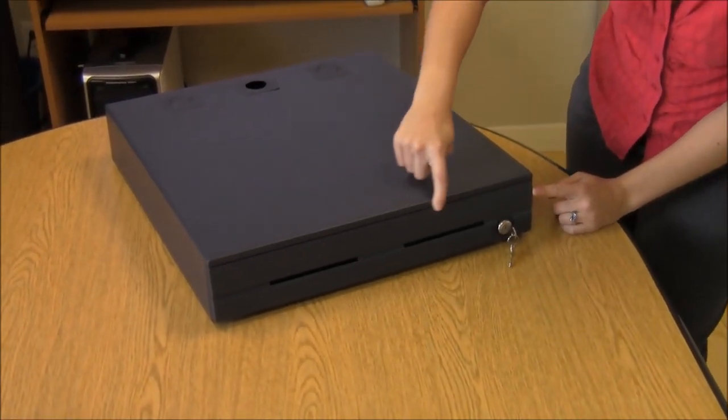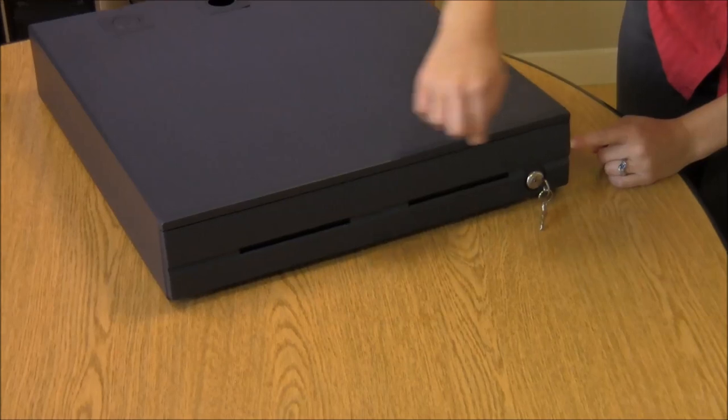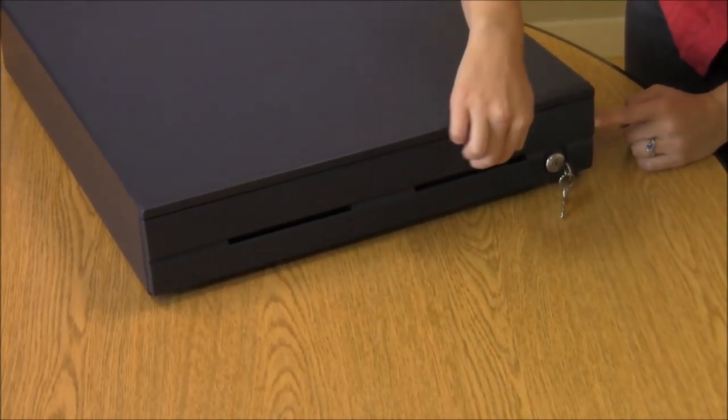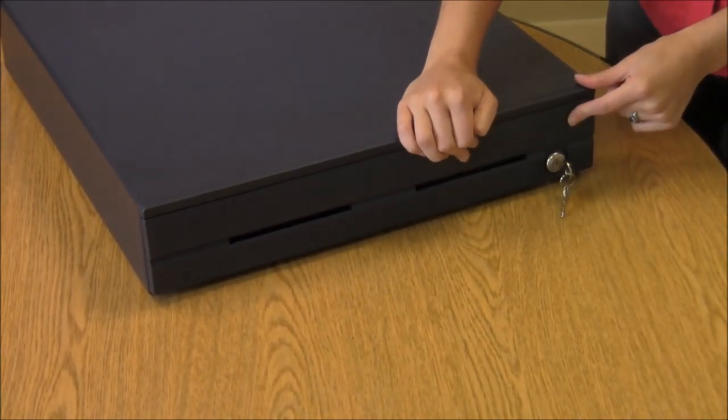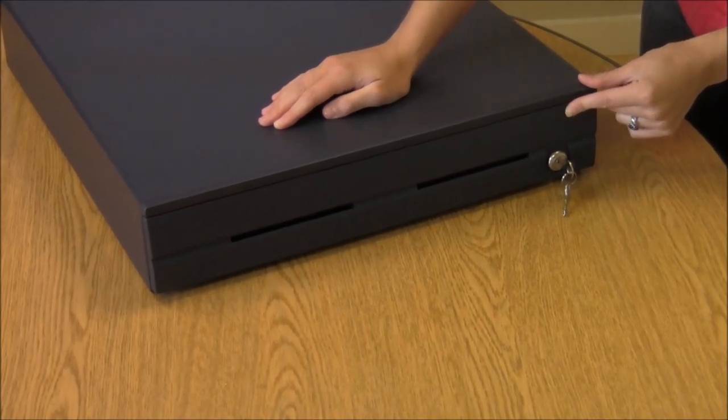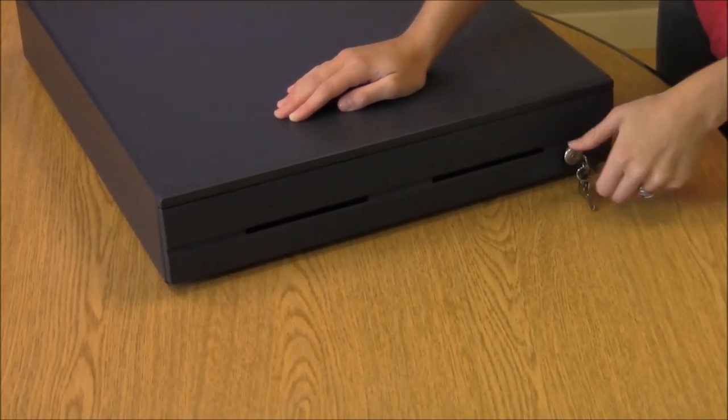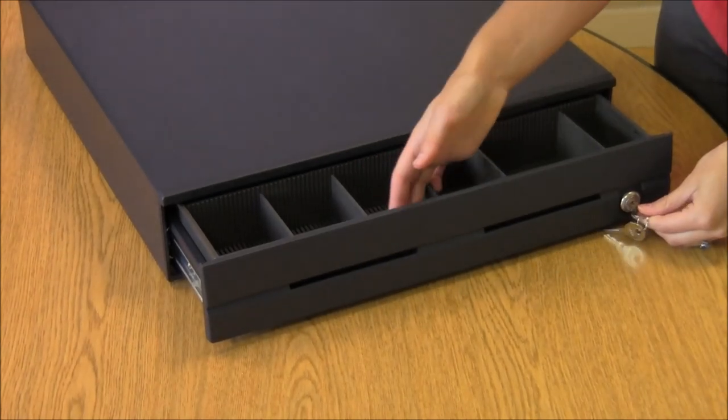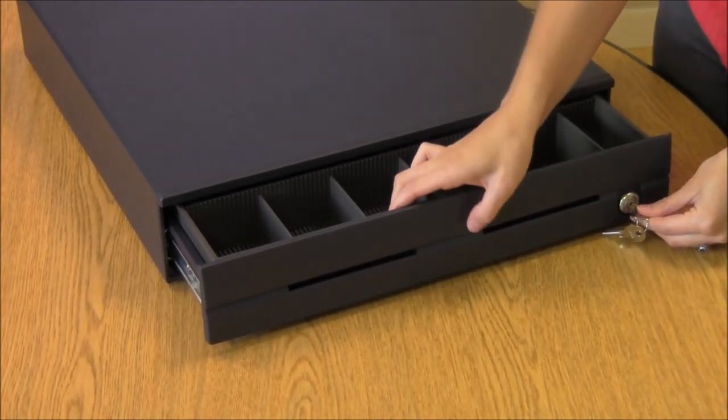The cash drawer face is plastic, which in this case would be good because it's not going to dent. Sometimes the metal cash drawers will dent, and there's nothing you can do to get that out of the face of the cash drawer. On the inside, though, there is metal, so it's not just a plastic face.